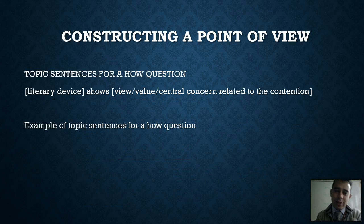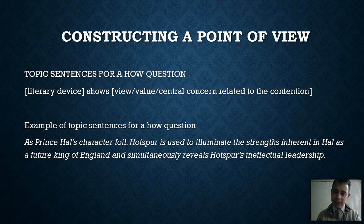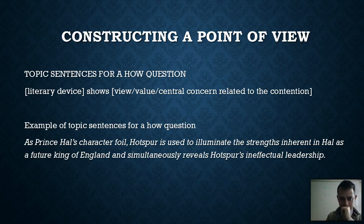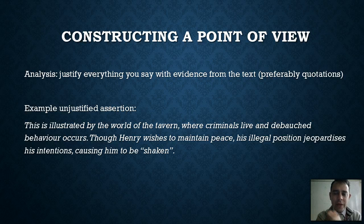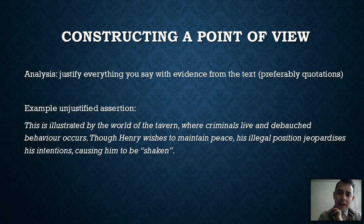For 'how' questions, the general structure is: literary device shows the viewer value or central concern. Here's an example: 'Character foil — strength inherent in Hal, future king of England — Hotspur's ineffectual leadership.' It's that character contrast between the two foils. Another thing we must do: if we assert something about the text, we must have evidence from it. We've got our reason and logic — that's great — but we must also justify that with empirical evidence.